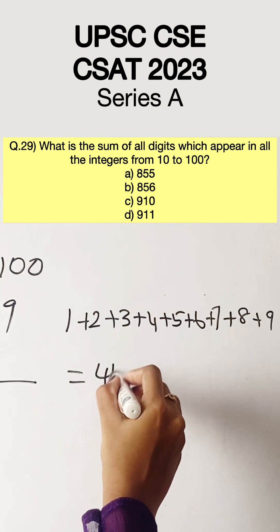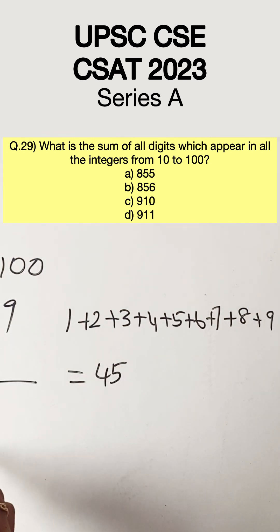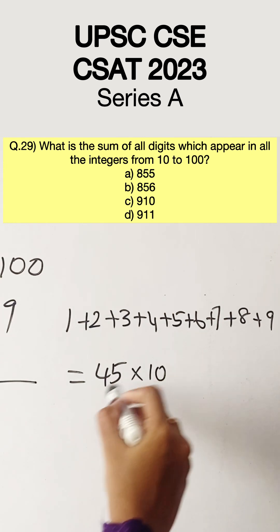Adding 1, 2, 3, 4, 5, 6, 7, 8, 9 we get 45. Multiplying 45 with 10 we get 450.